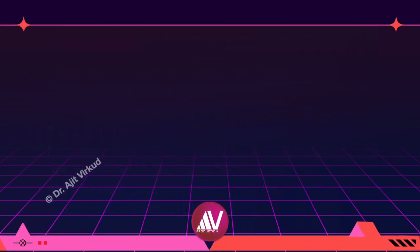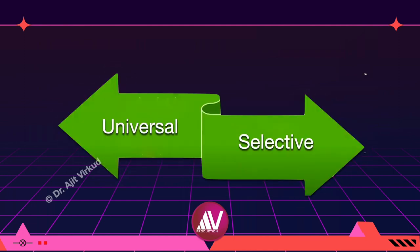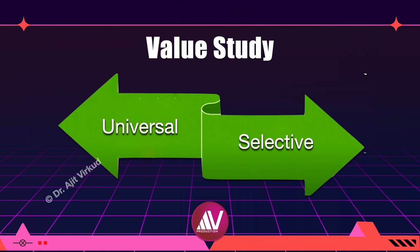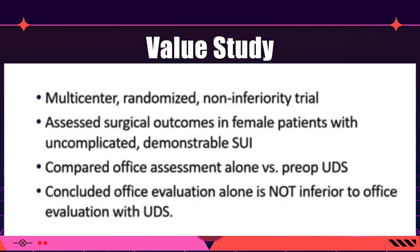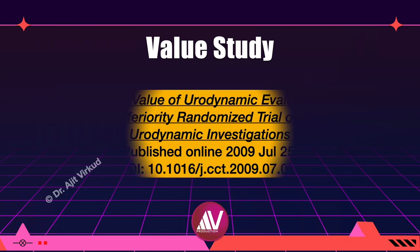To answer the question of universal versus selective use of this test, a multicentric randomized trial called the VALUE study concluded that office evaluation alone is not inferior to office evaluation along with urodynamic study in cases of urodynamic incontinence. This is level 1 evidence. The reference for the same is given here.